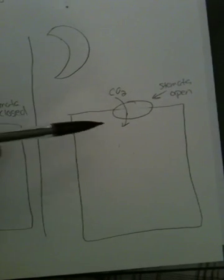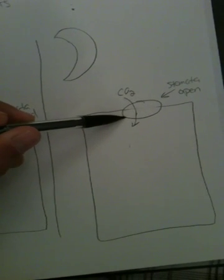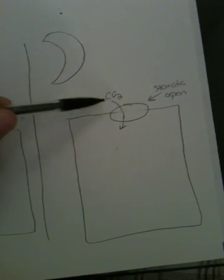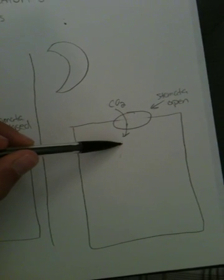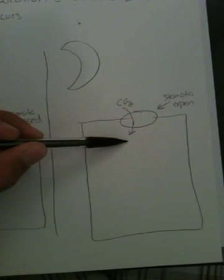At night, since the risk of water loss isn't as great, the stomata opens and CO2 can come in and can be saved for later use when photosynthesis will be done. And that's all for today.